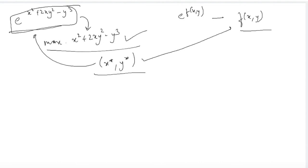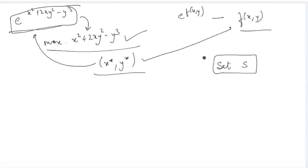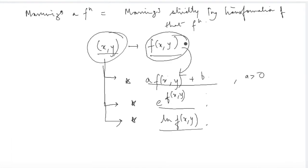These are some important points to keep in mind when we talk about maximization and minimization for functions of several variables. In the next class, we will try to understand more about the set S for calculating the optimum point in functions of several variables.